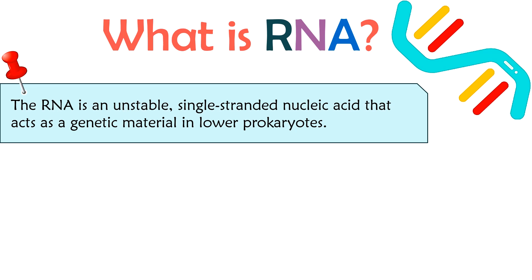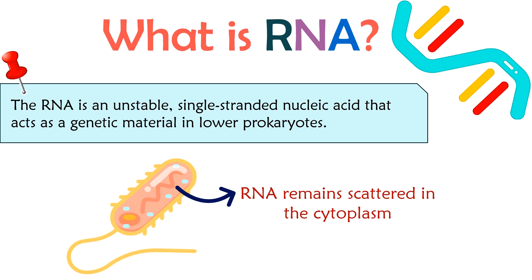RNA remains freely scattered in the cytoplasm and is passed from one generation to the next. However, eukaryotic cells also contain RNA but not as a genetic material. This RNA occurs in the nucleolus and ribosomes, as well as remains freely scattered in the cytoplasm. In eukaryotes, RNA facilitates other processes like protein synthesis and message delivery.